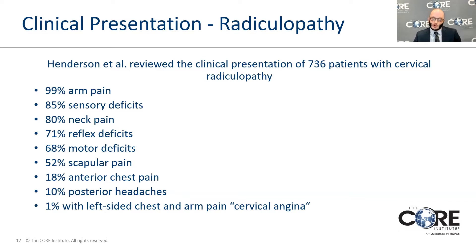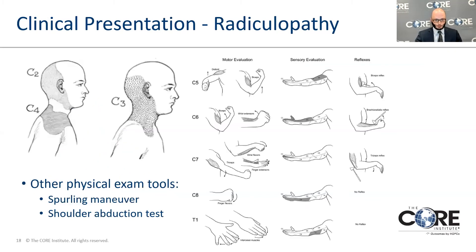Almost all patients with radiculopathy present with arm pain, but you'll also see a predominance of associated neck pain. Frequently they'll have sensory deficits — numbness, tingling, or asymmetry in sensation compared to the other side. People can also present with headaches or scapular pain, so we frequently do shoulder exams. Patients can present with weakness in the muscle groups that the nerves go to. In the clinic, I evaluate nerve roots by testing strength, sensation, and reflexes. A Spurling maneuver — rotating the head and extending the neck — can reproduce symptoms in the distribution of that nerve.